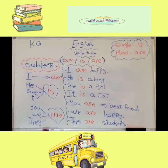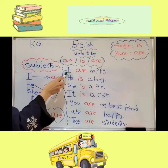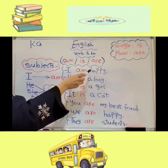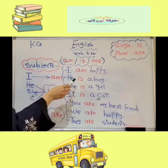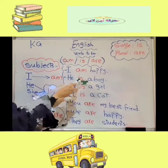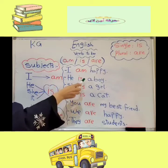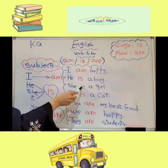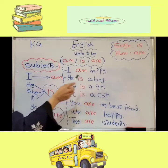Let's take some examples. I takes am — I am happy. He takes is — he is a boy. She takes is — she is a girl.